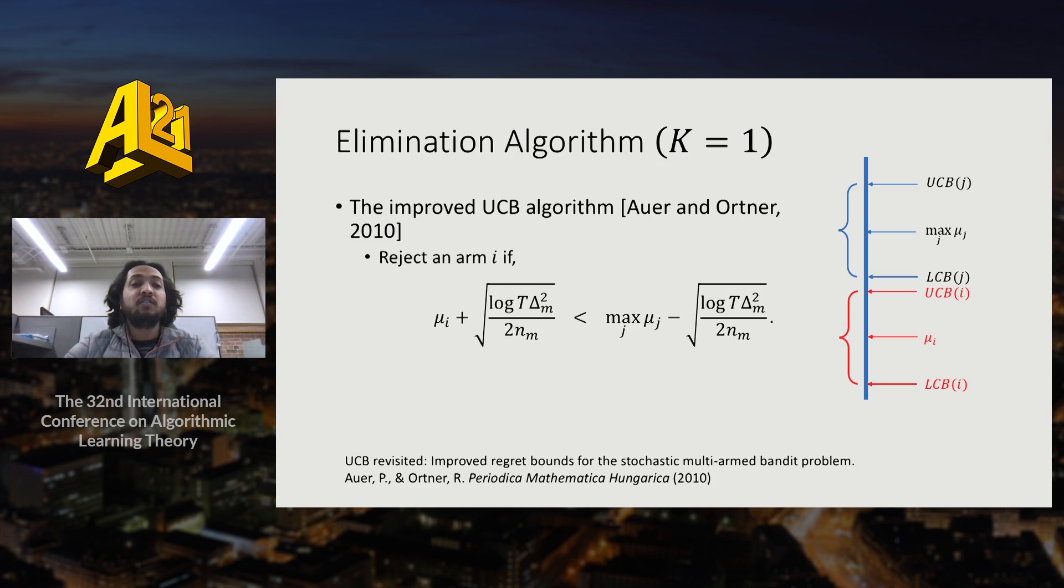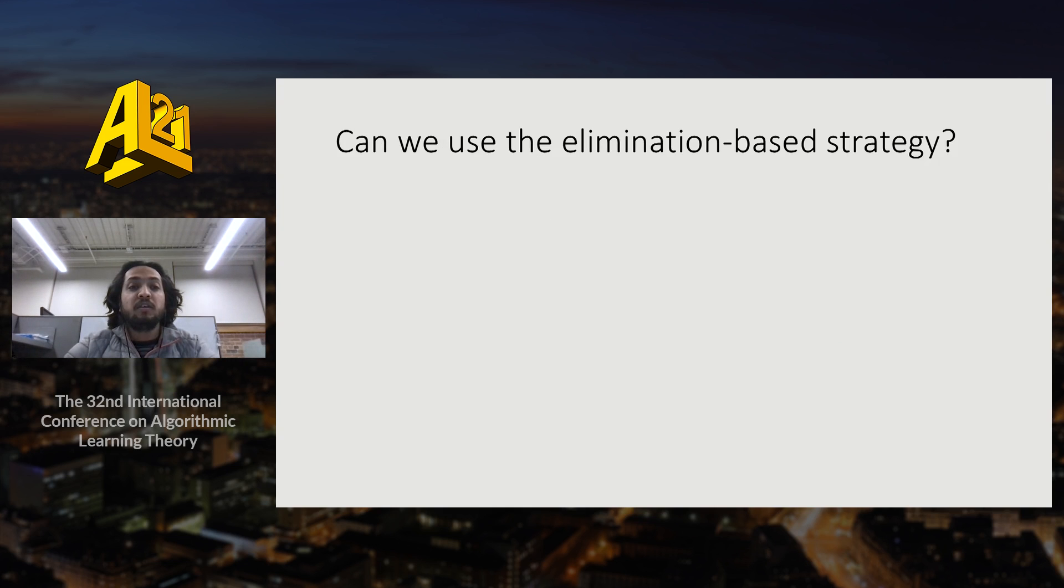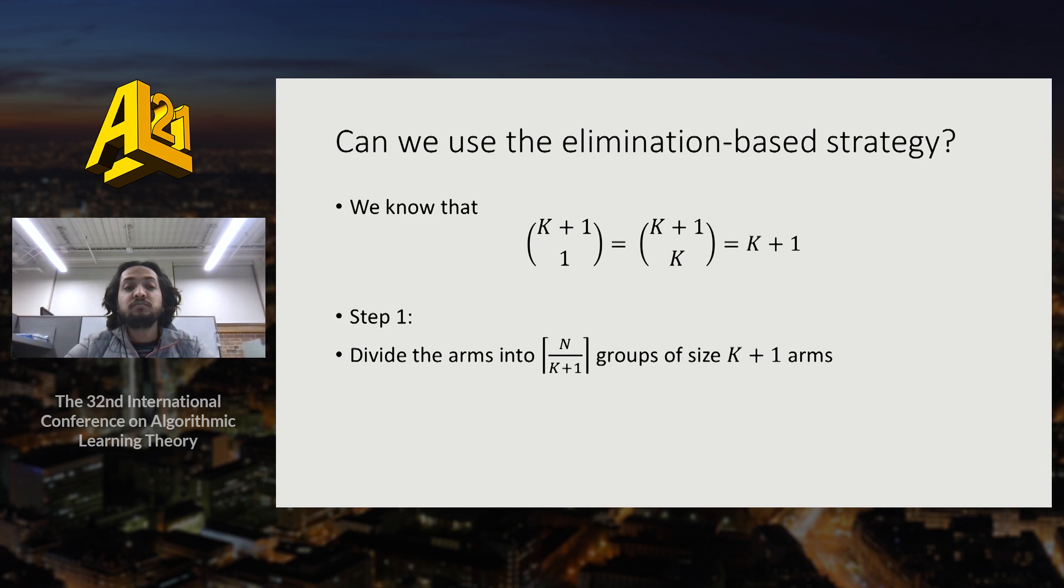We have another algorithm which works on elimination strategy which keeps on eliminating arms by comparing the UCB of an arm and the LCB of the best arm. We take inspiration in developing our algorithm. Can we use an elimination based strategy? We know that selecting K arms from a set of K plus 1 arms is same as eliminating one arm from a set of K plus 1 arms and both of them are order K.